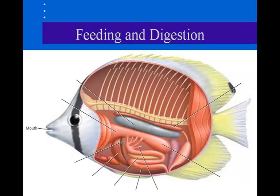With the evolution of jaws, fish were able to become predators. The organs of the fish's digestive system are similar to other vertebrates. Most fish swallow food whole, passing it from the mouth into the esophagus and then into the stomach, where most of the digestion occurs. From the stomach, food moves to the intestines. Some fish have pyloric ceca — small pouches that secrete enzymes for digestion and absorption.